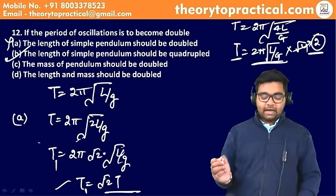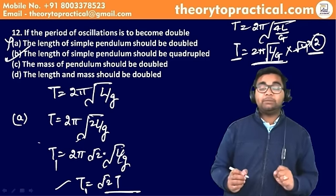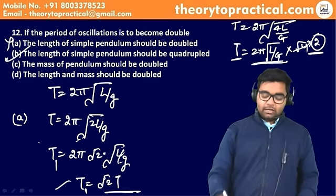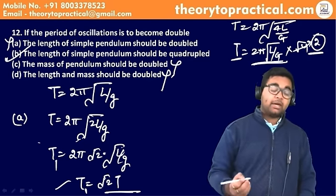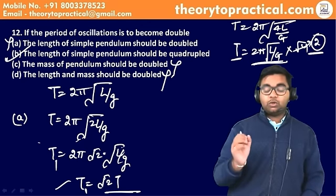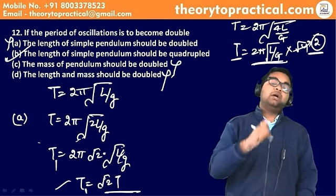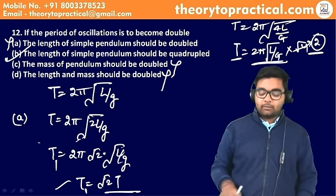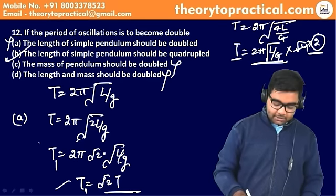Option C: mass of pendulum doubled — time period formula में mass का कोई term नहीं है, तो mass का कोई effect नहीं। Answer: length को quadruple करो — length 4 गुना होगी तो time period automatically double हो जाएगी। Formula में put करो, answer मिल जाएगा।